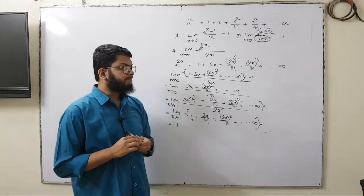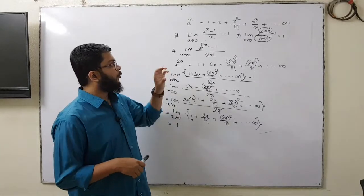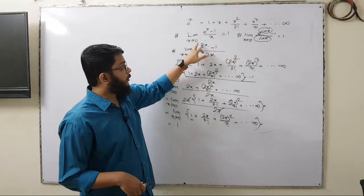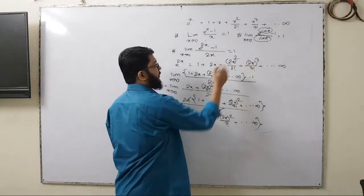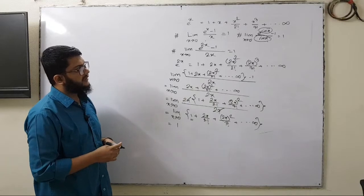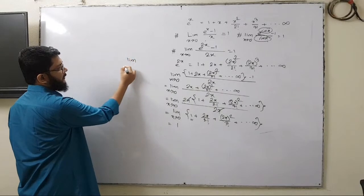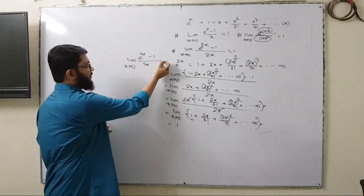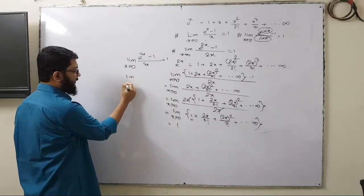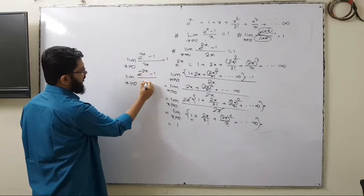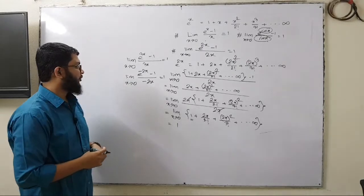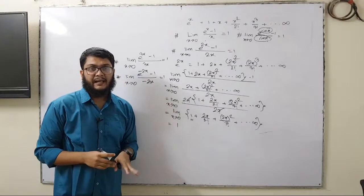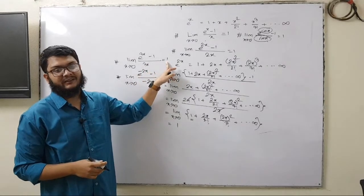So from this tutorial you have understood what the result would be for problems similar to this. e to the power x minus 1 divided by x equals 1; e to the power 2x minus 1 divided by 2x also equals 1. Similarly, limit x tends to 0 of e to the power 2x minus 1 divided by 2x equals 1, and limit x tends to 0 of e to the power negative 2x minus 1 divided by negative 2x also equals 1. Try these two problems on your own and let me know whether you get 1 or something else.